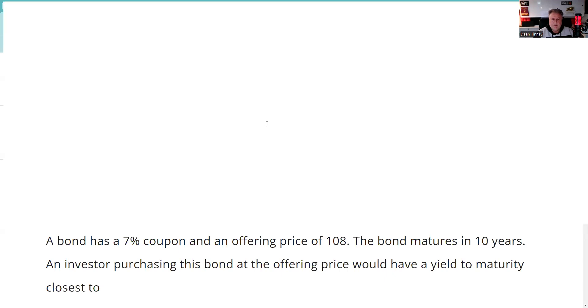A bond has a 7% coupon and an offering price of 108. The bond matures in 10 years. An investor purchasing this bond at the offering price would have a yield to maturity closest to. I'm glad somebody sent this in. This happens quite a bit.